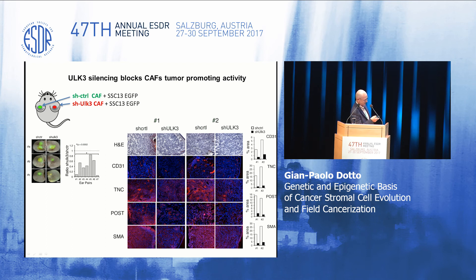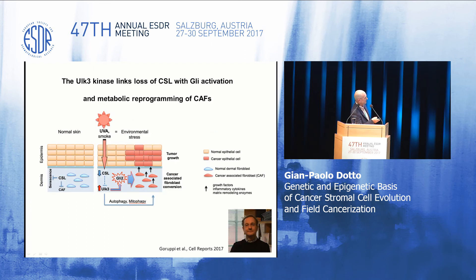ULK3 is overexpressed in cancer-associated fibroblasts, so silencing the gene reduces tumor growth. Using our ear injection assay — injecting one combination of cells in one ear and another in the other as internal control — cancer-associated fibroblasts in which we silenced ULK3 slow down tumor growth and also slow down induction of cancer-associated matrix proteins like tenascin-C, periostin, and angiogenesis. We conclude that ULK3 is a critical target of CSL that links CSL to GLI2 in the sequence of events leading to CAF activation.